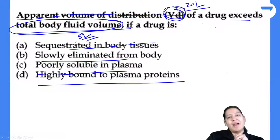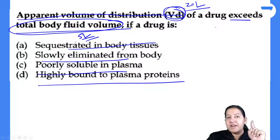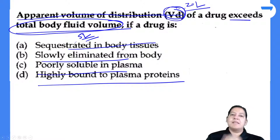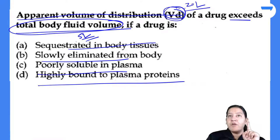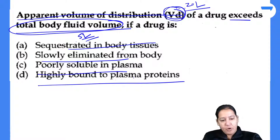For those who answered D — please share your thought process so I can explain the mistake. You cannot apply guesswork in exams. It should be conceptual. Apply the formula I have taught you clearly. In the formula it is the bound form in the denominator. If you want more volume of distribution, bound form should be less.